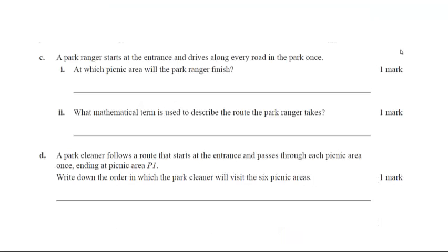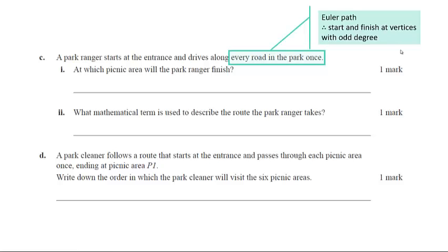Part C of this question then says a park ranger starts at the entrance and drives along every road in the park once. So that's a key piece of information: driving along every road once means that we have an Euler path. So if we have any vertices that are of an odd degree, we're going to start at one and finish at the other. So if we look at the next part of the question, at which picnic area will the park ranger finish, we already know the entrance has a degree of 3 and is odd, so we need to find the other vertex in the graph that is also odd.